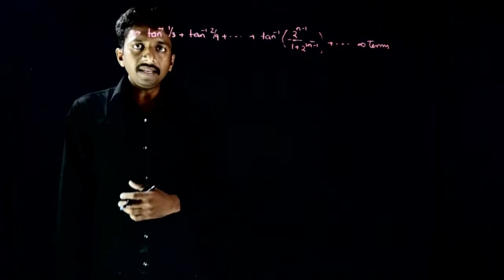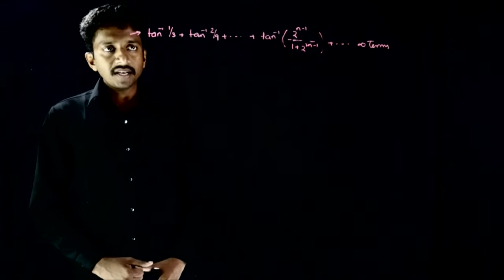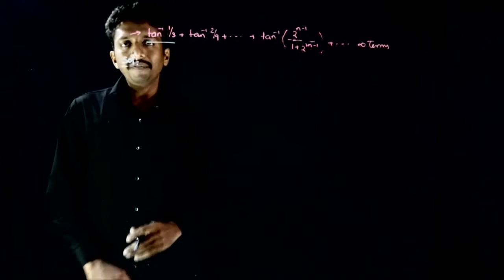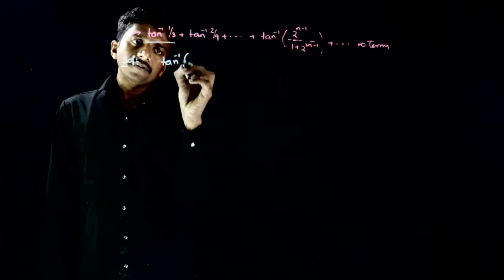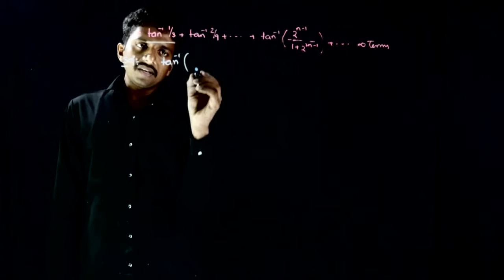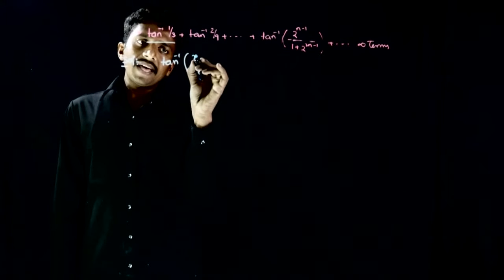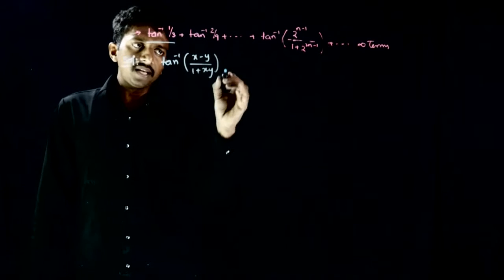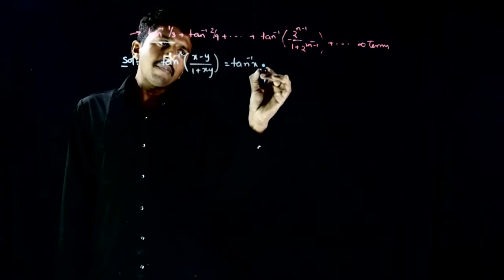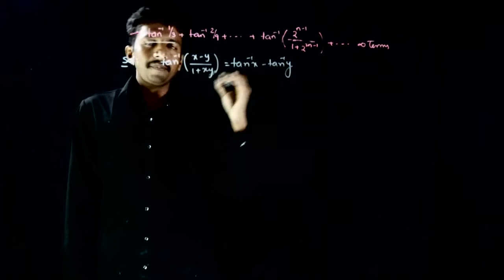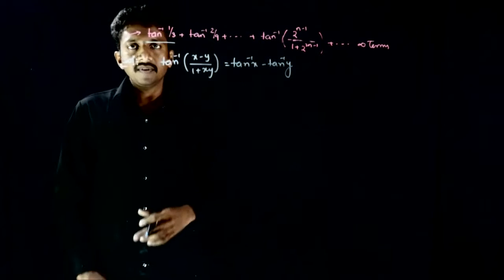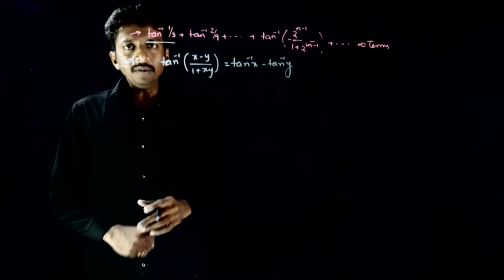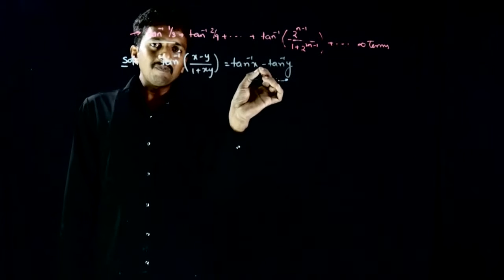This is a sequence involving inverse trigonometric functions. The general technique is you have to split every term into a difference of two terms. So tan inverse of whatever is given, you have to express it in the form tan inverse of (x minus y) divided by (1 plus xy), which can be written as tan inverse x minus tan inverse y. This is the idea on which this question is based. So I have to be able to split each term into two terms with a minus sign in between.